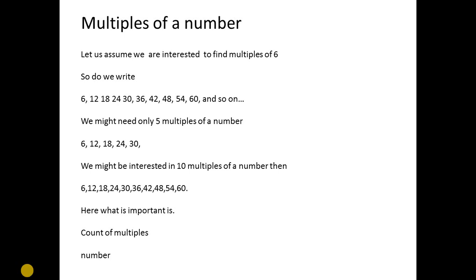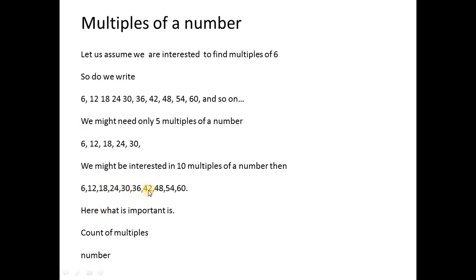First of all, what are the multiples of a number? Let us assume we are interested to find the multiples of 6. The multiples of 6 are: 6, 12, 18, 24, 30, 36, 42, 48, 54, 60, 66, 72, and so on. If you only want 5 multiples of 6, the answer is 6, 12, 18, 24, 30.